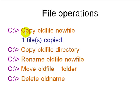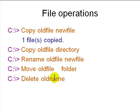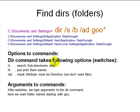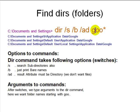For file operations: you can copy one file to a new file, copy a file to a folder, rename a file, move a file to a folder or a new name, and delete a file or folder. To locate folders you can use 'DIR /S /B /AD google' — /S means recursive, /B means bare (names only), /AD means attribute is directory — to find a folder named 'google' on your drive.